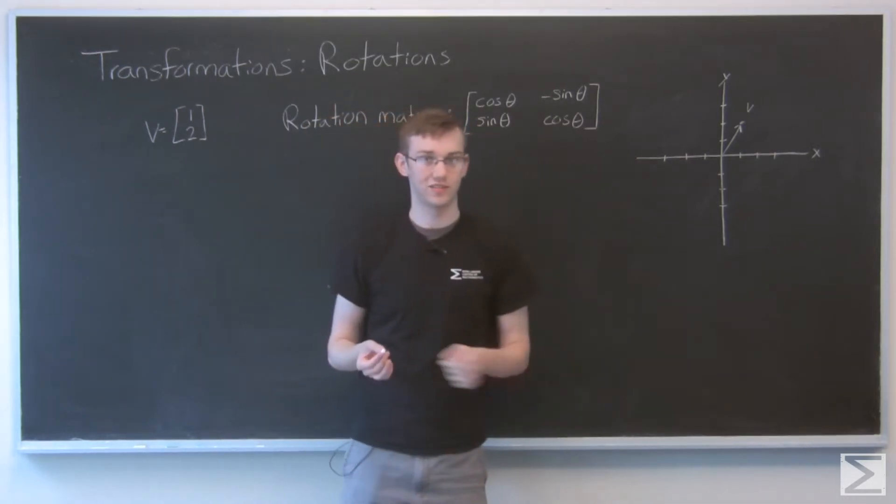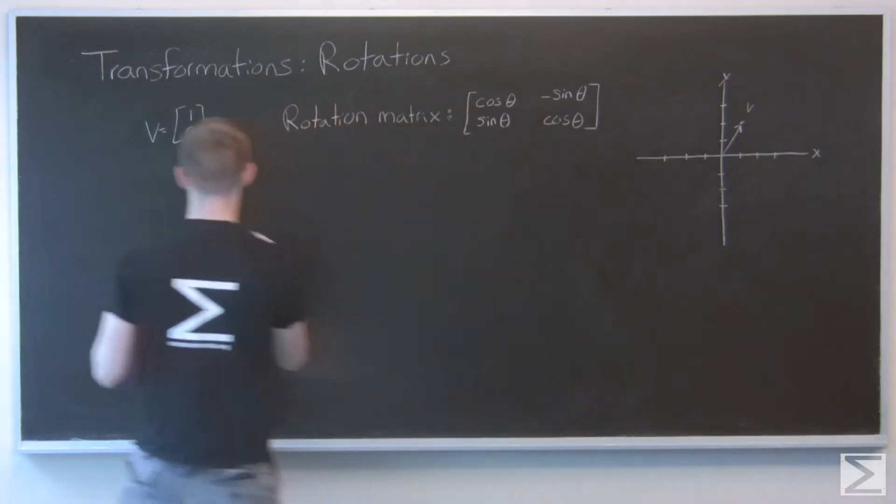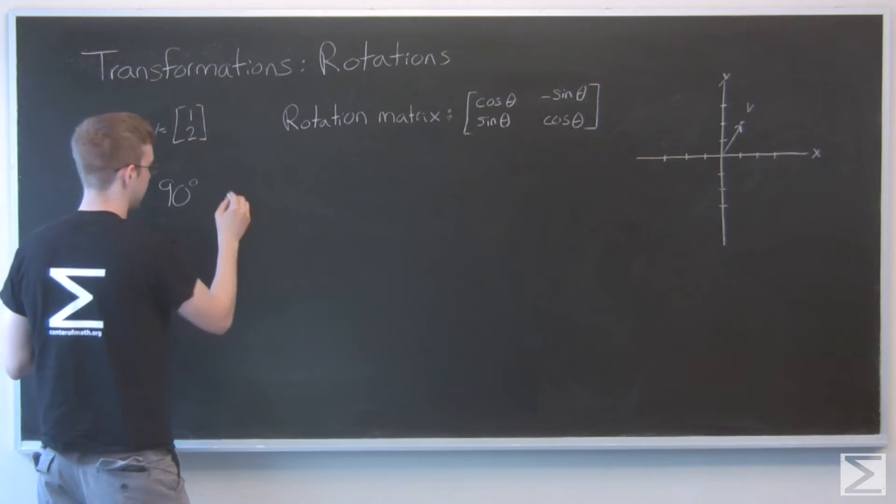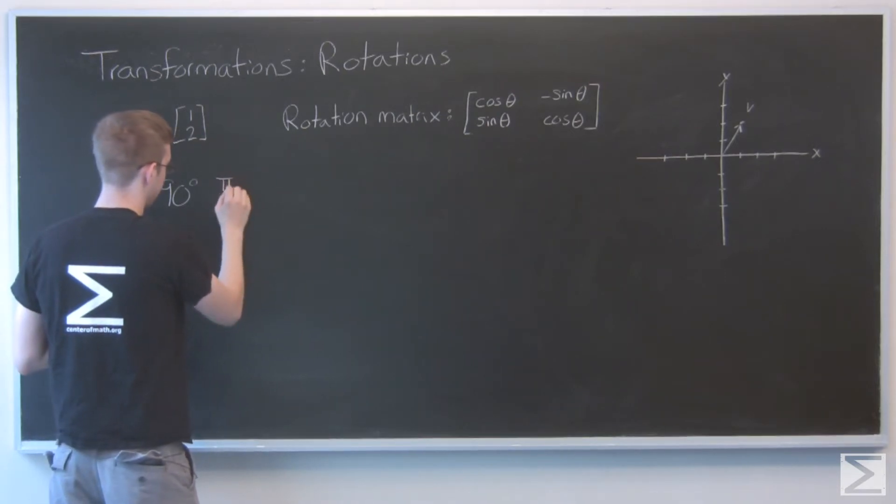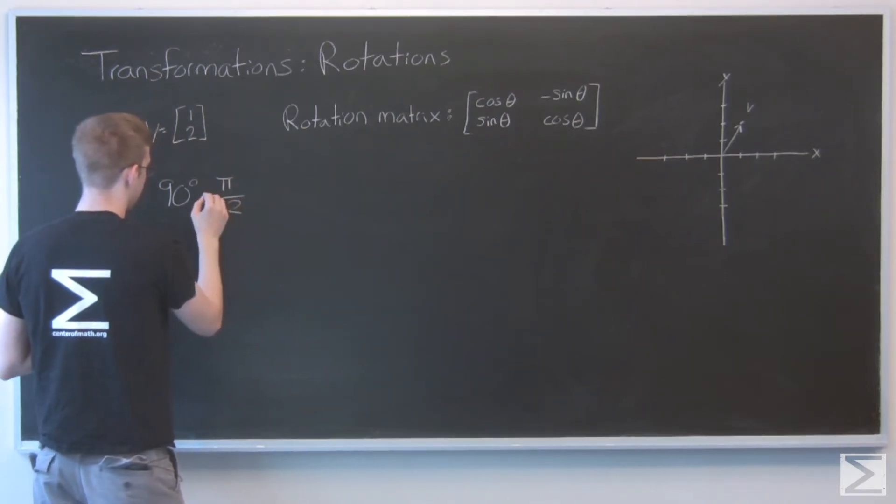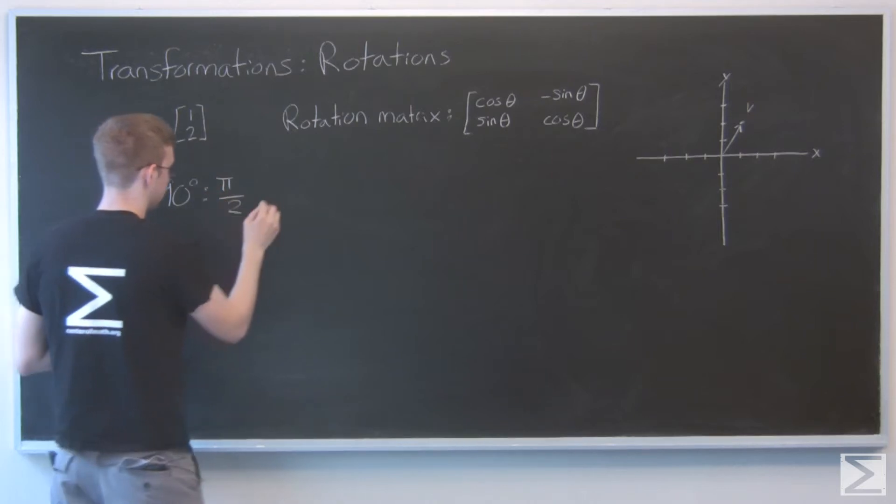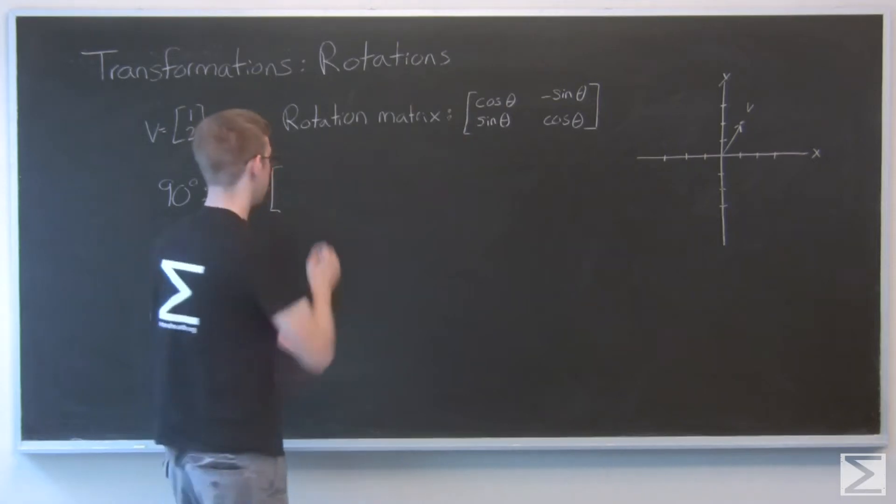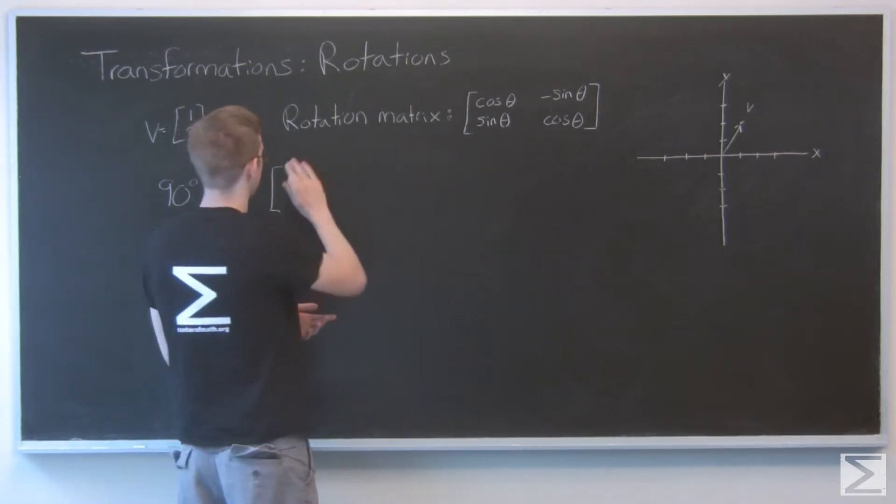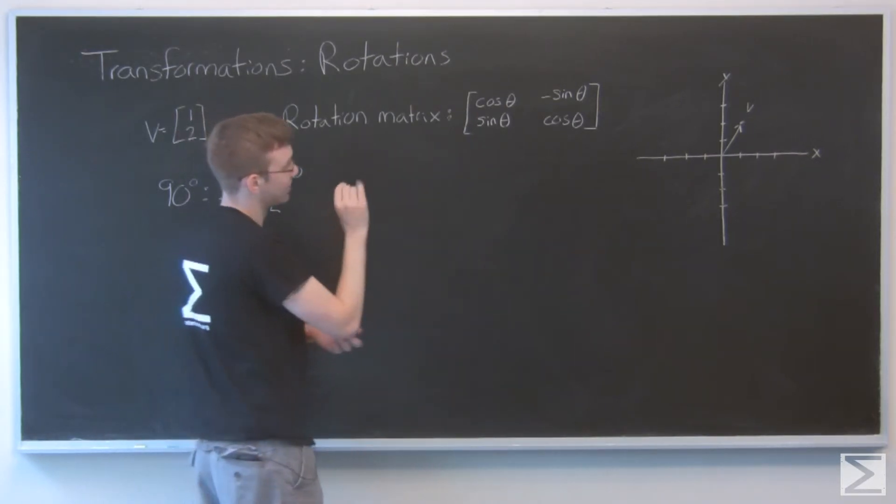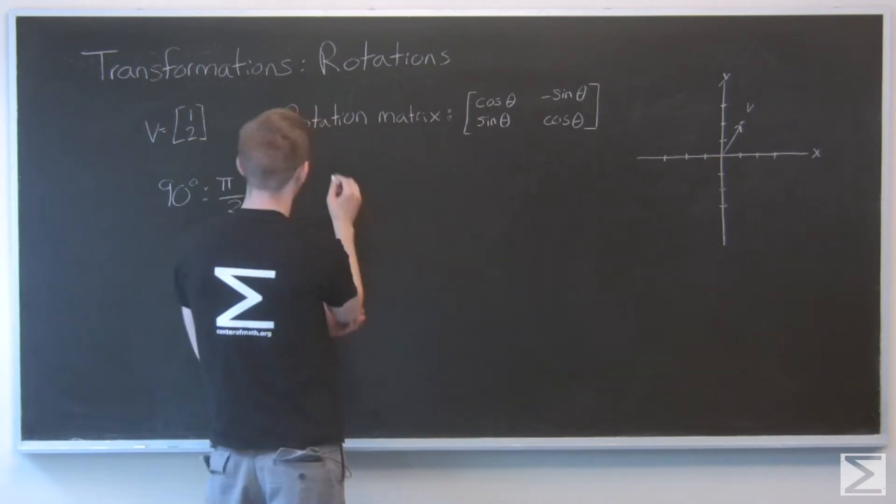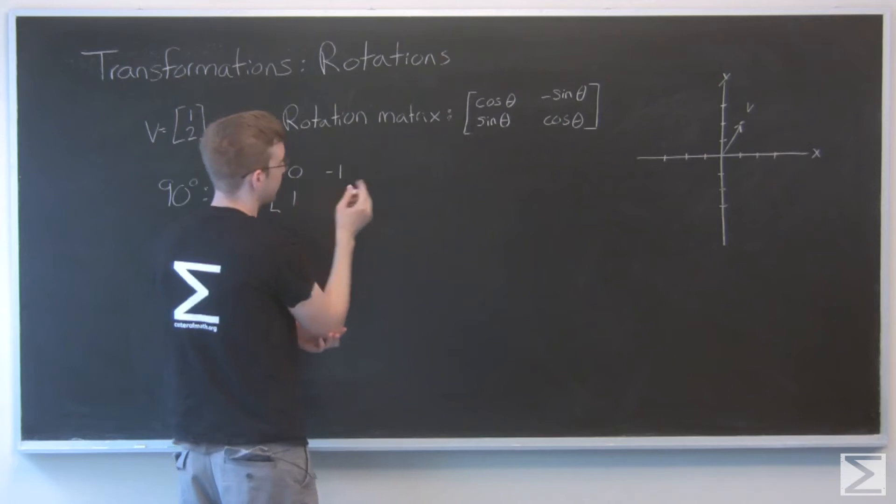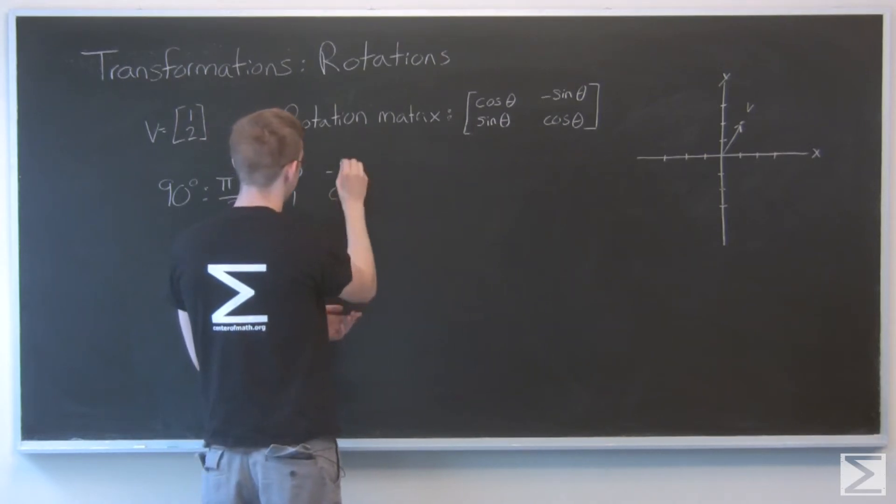So let's look at a couple different angles and see what this results in. Let's start with 90 degrees. That's the same as pi over 2. OK, so cosine of pi over 2 is 0. Negative sine of pi over 2 is going to be negative 1. Sine of pi over 2 is 1. And cosine of pi over 2, again, is 0.